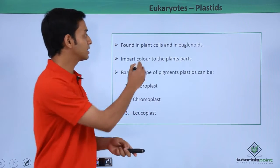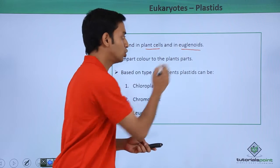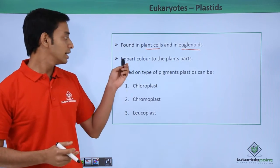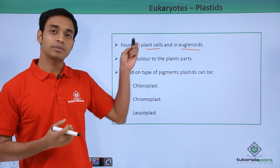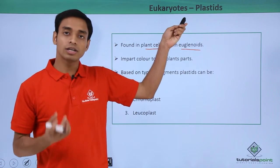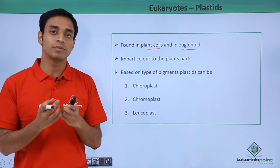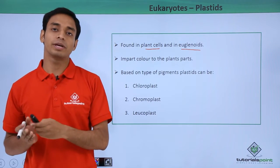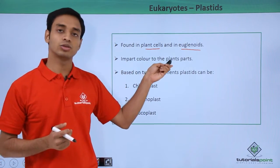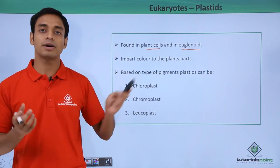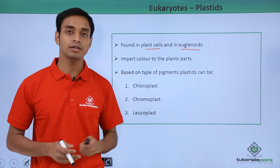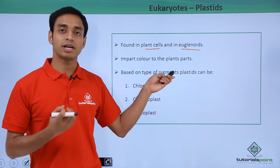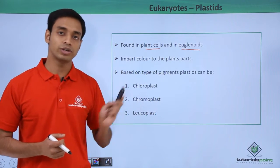Plastids are found in plant cells and in some of the euglenoids, so they are not found in animal cells. These are organelles which have got colors because of the presence of some pigments. Because of these colorful pigments, color is imparted to various plant parts. Based on the type of pigments a plastid contains, it can be of three types.